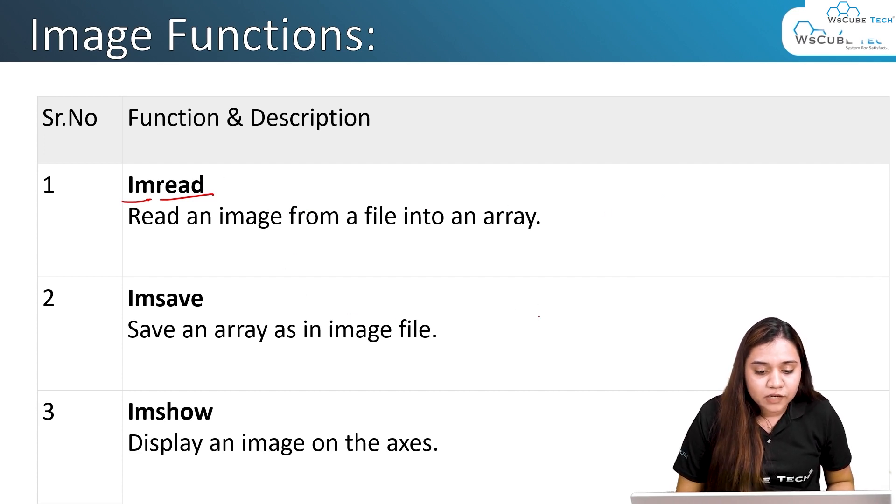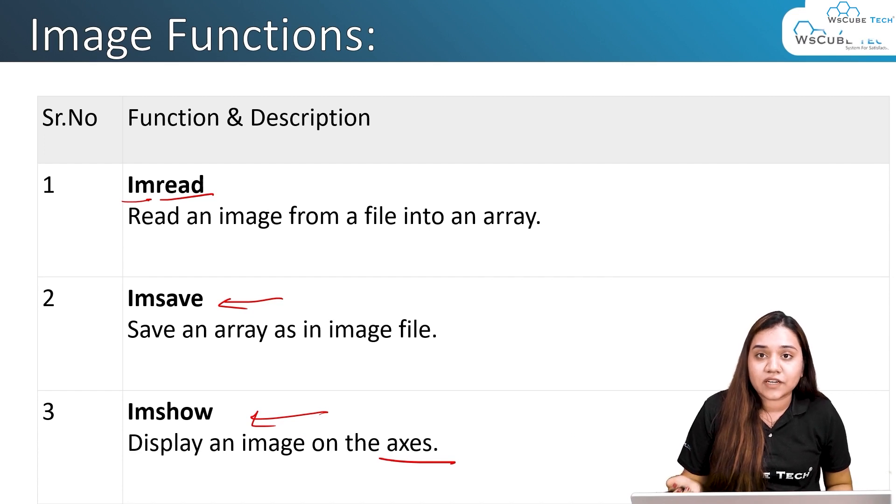If you want to save a file, if you want to save a graph, we use imsave, which means image save. And imshow displays an image on the axes. If we have axes, that means x and y axes, or it could be z as well if you have a 3D plot.